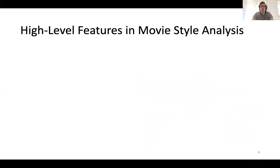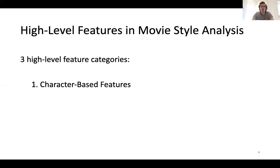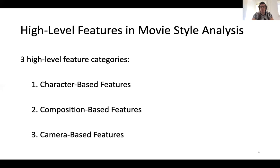The intuition behind this work is to reproduce the cinematography expert's approach of analyzing movies through different angles. We designed seven high-level features split into three categories: first, character-based features, since characters are central to movies and it is essential to understand how the director frames them and how they progress spatially and temporally. Then, composition-based features, which give information about the complexity of the mise-en-scène. Finally, camera-based features, which are important for understanding the camera behavior as one way for the director to express intentions — and also as the eye of the audience.